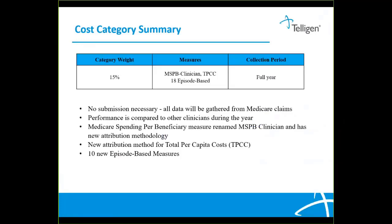For 2020, the cost category remains weighted at 15%. You do not need to submit any data for this category — it will be gathered from your Medicare Part A and B claims for the full year. Your performance will be compared to other clinicians for the year, not historical benchmarks. There are a total of 20 measures, but you will only be scored on the measures where you meet case minimum. Case minimums are 20 for total per capita cost, 35 for Medicare spending per beneficiary clinician, 20 for acute inpatient measures, and 10 for procedural measures.